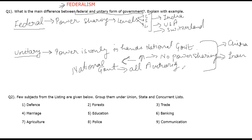Let's move on to the second question. Some subjects from the listings are given below — group them under the Union list, State list, and Concurrent list. We have to find out which category these subjects fall under. We have already discussed what the listings are — the subjects are divided for management, meaning which government handles which subject.